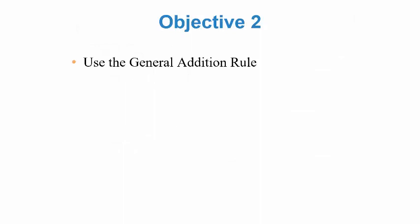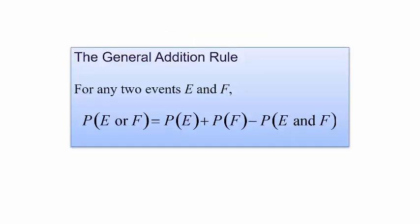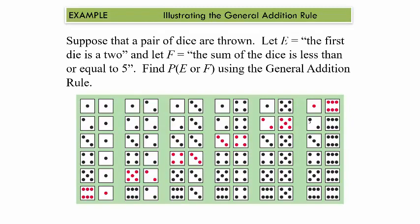Let's move to the second objective: the general addition rule. What happens when events are not disjoint — they can happen at the same time? For any two events E and F that are not disjoint, the probability of E or F is equal to the probability of E plus the probability of F, minus the probability that E and F both happen. This subtraction prevents double counting.